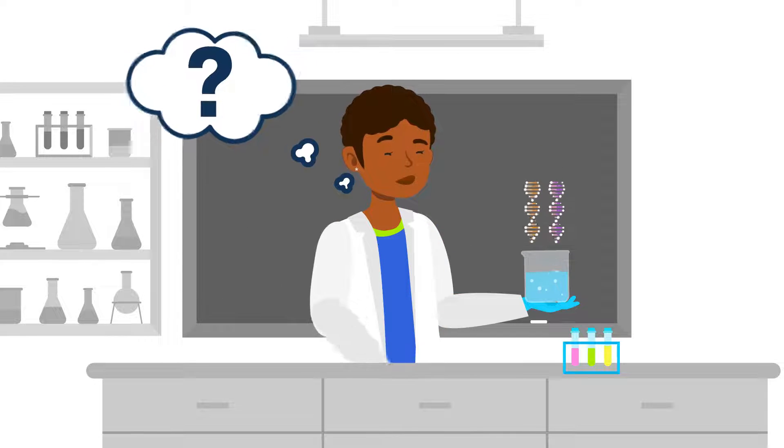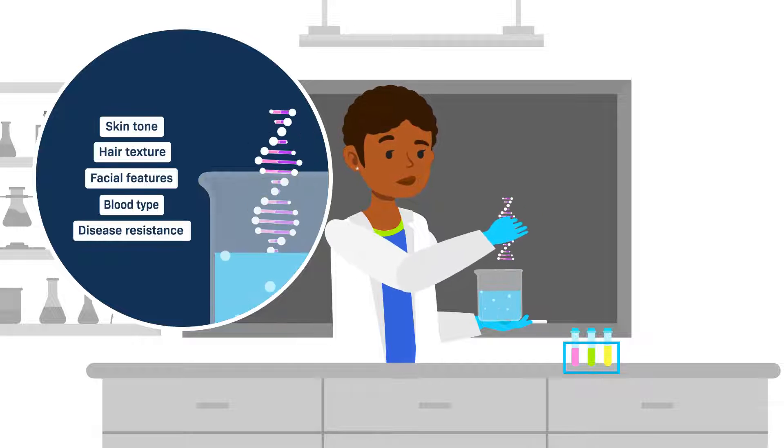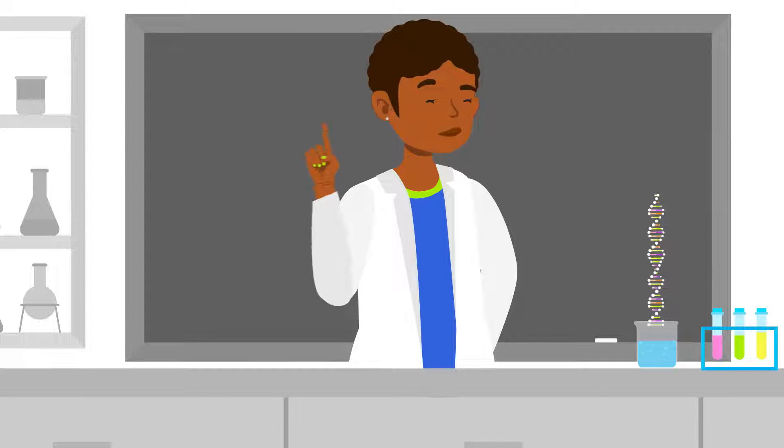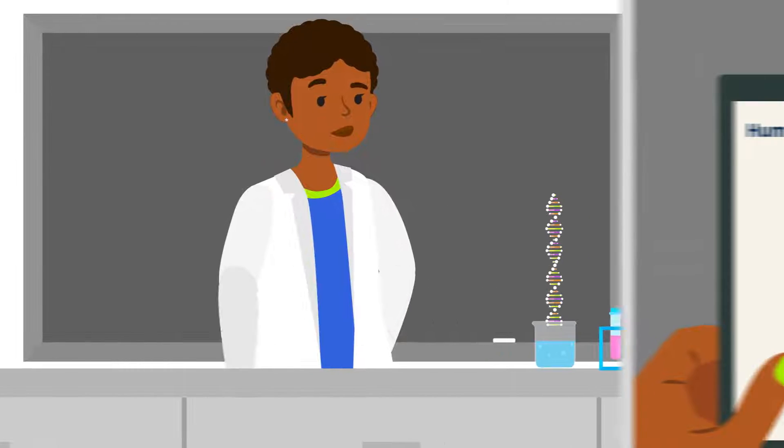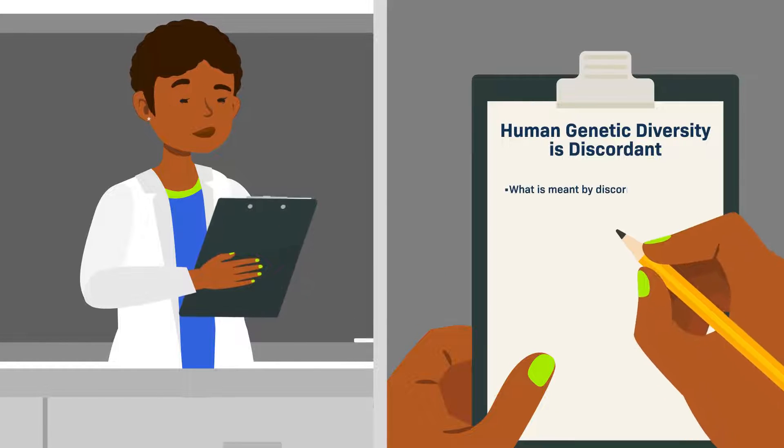This implied that knowing someone's race could predict other important biological information about them, like their blood type or their resistance to certain diseases. But we now know that simply isn't the case, because human genetic diversity is discordant.